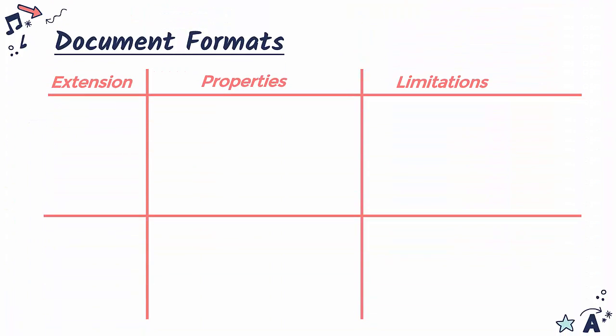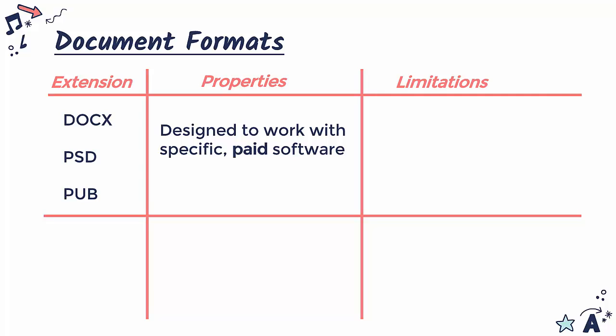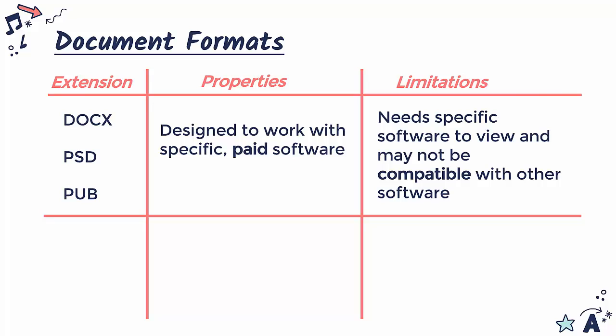Finally, talking about some document formats for more general documents you might use in pre-production or production. We have various different file extensions and formats: Docx for Microsoft Word, PSD for Photoshop, Pub for Microsoft Publisher, which is a desktop publishing software. These are specific paid software formats working for really specific applications — usually branded and usually paid. You have to pay for Microsoft Office, you have to pay for Photoshop. These extensions may not be so good if you're trying to keep things portable, as they need specific software to view and may not work with other software. You've got to be careful storing stuff using really specific file formats because they lack the portability which other formats like PDFs might have.